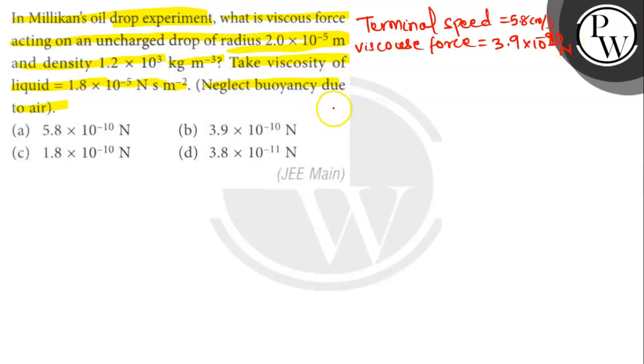Radius of the given uncharged drop r equals 2×10⁻⁵ meter. Density of the uncharged drop ρ is equal to 1.2×10³ kg per meter cube.